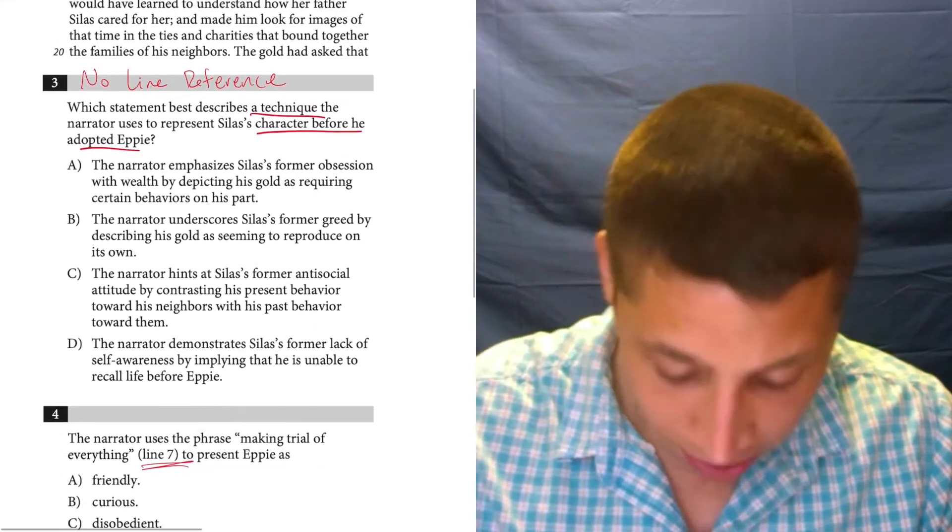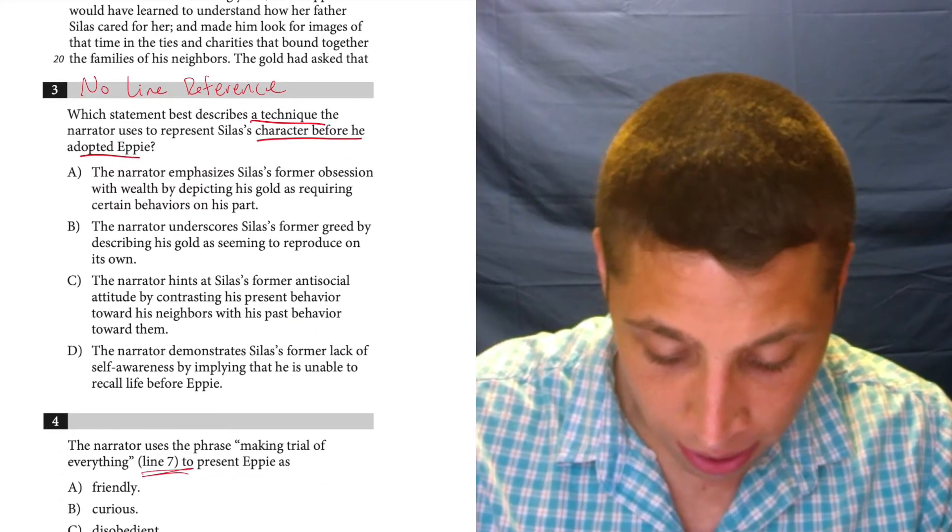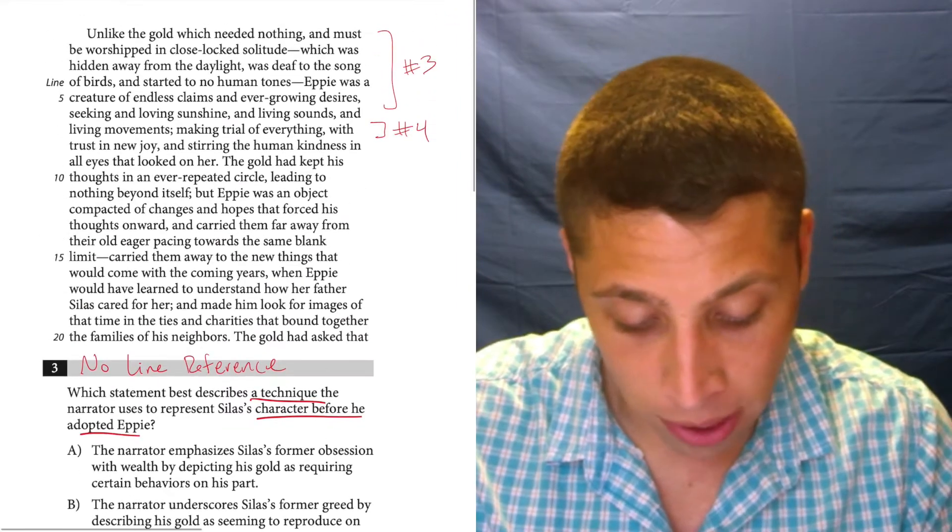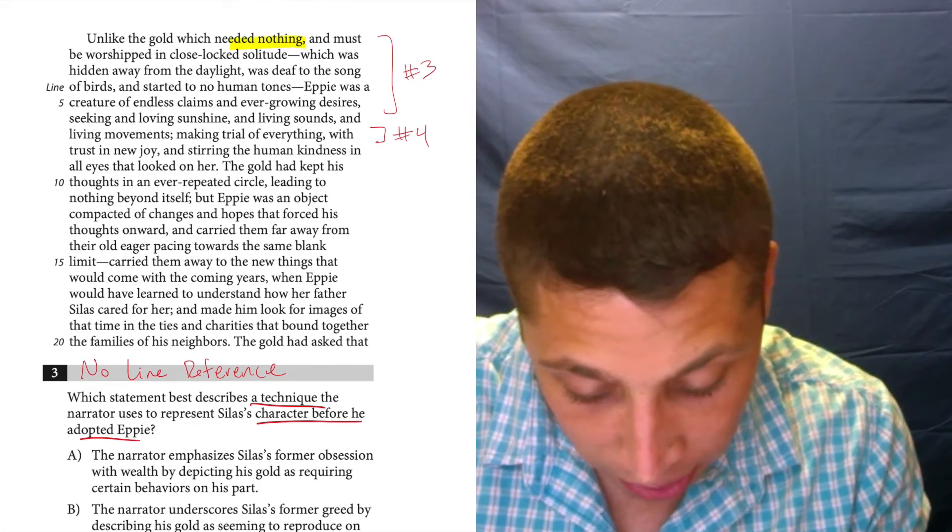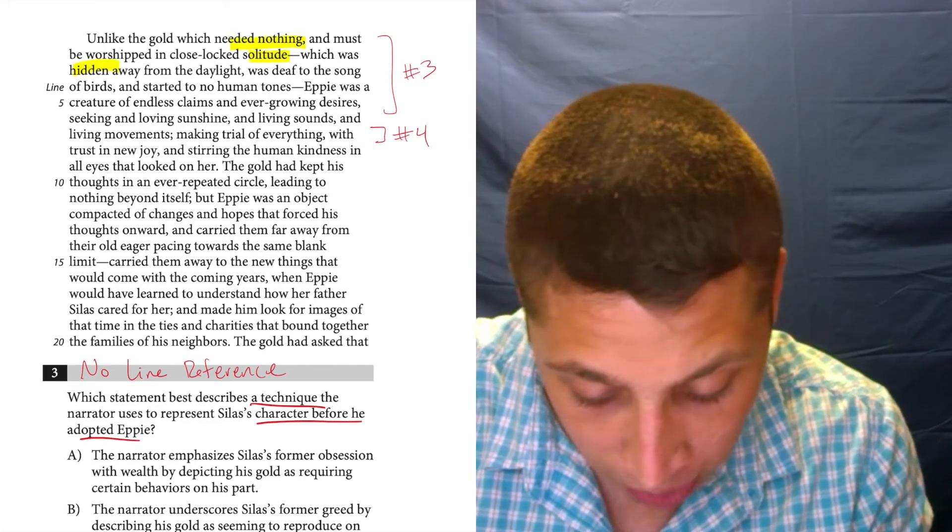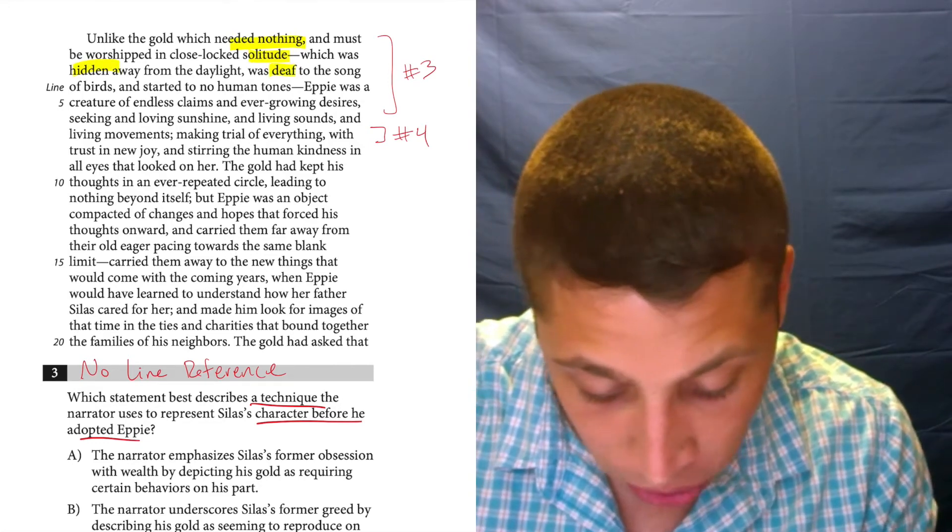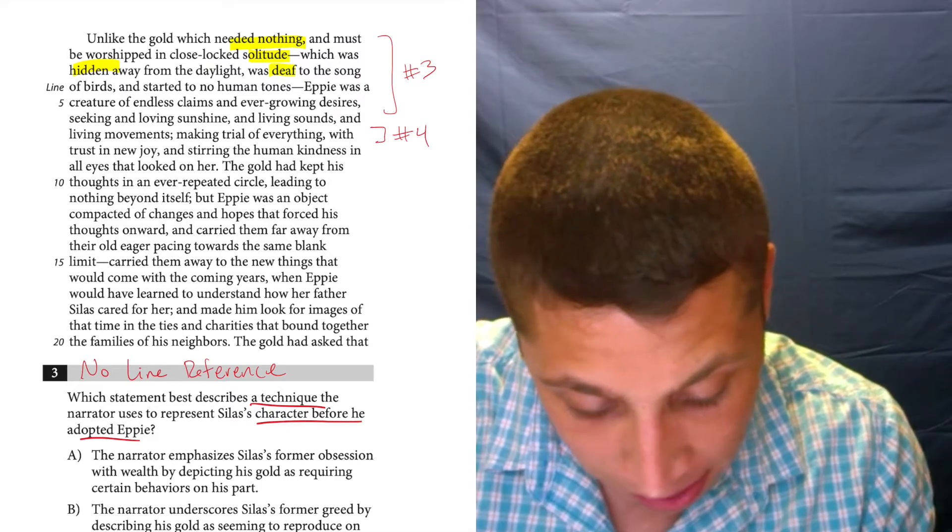So does this really answer the question? Silas's character before he adopted Epi? Well, there's some things. We talk about the gold - needs nothing, it's in solitude, hidden away, deaf to the song of birds. Whereas Epi is contrasted with that. There's a contrast.